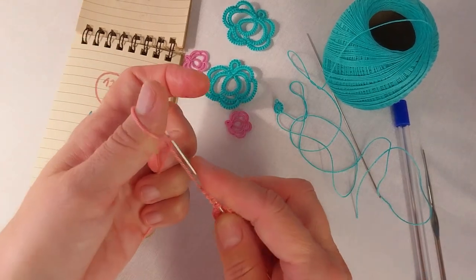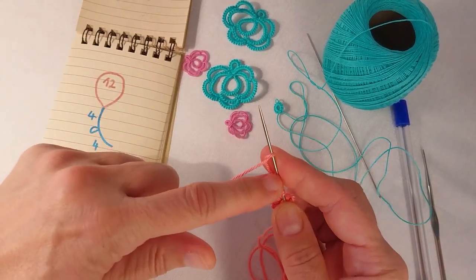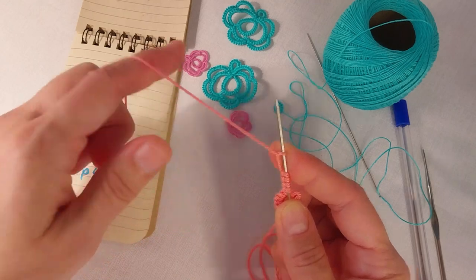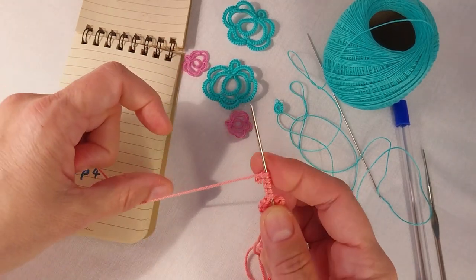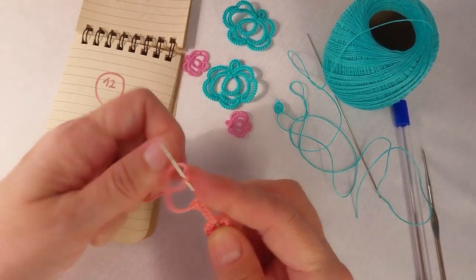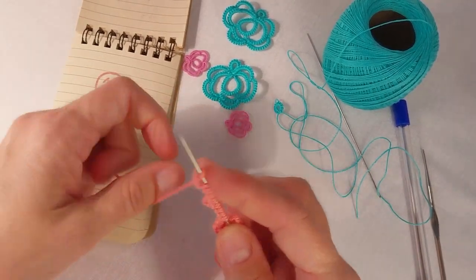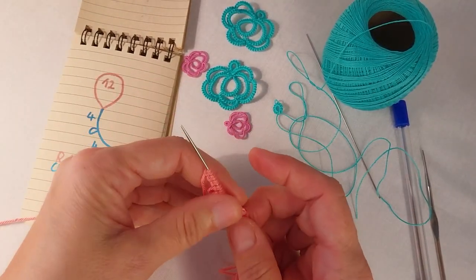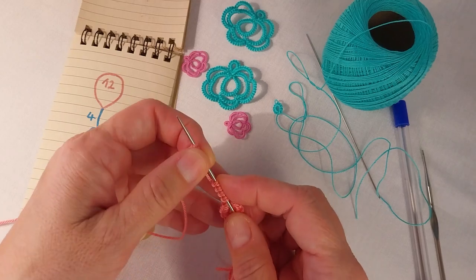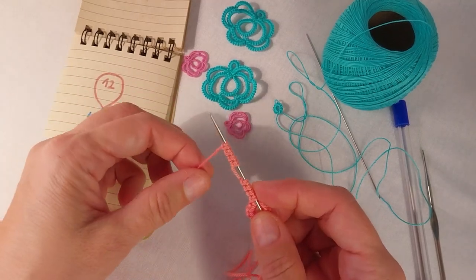So I am going to make another stitch but not right close to it but a bit further. 1 double stitch, the 2nd, the 3rd and the 4th. So this is the chain of 4 double stitches, a picot, and 4 double stitches.